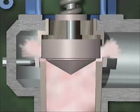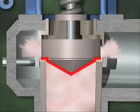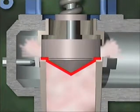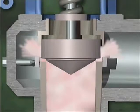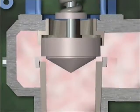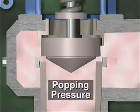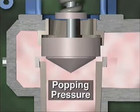As the disc lifts, the lip of the disc is suddenly exposed to system pressure. Since a larger area of the disc is now exposed to pressure, more force is being exerted on the bottom of the disc. This increased force overcomes the spring tension and causes the disc to pop open to about a 60% open position. When the valve's popping pressure is reached, the valve should open with a clean and sudden pop.